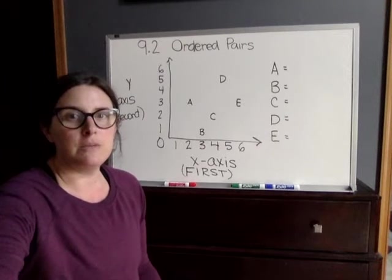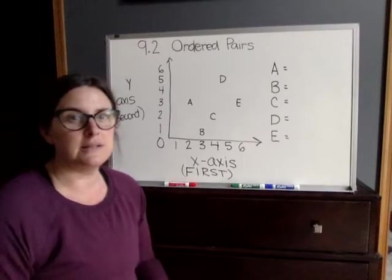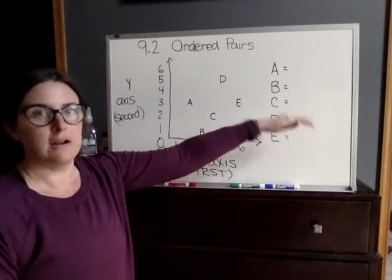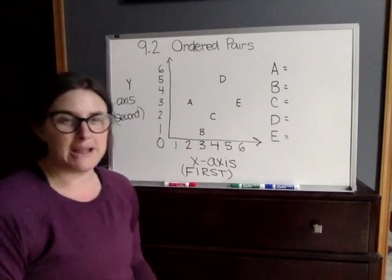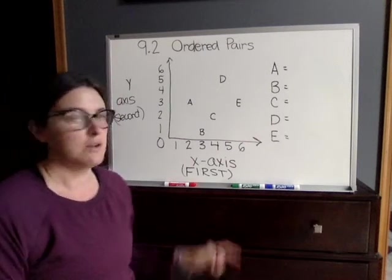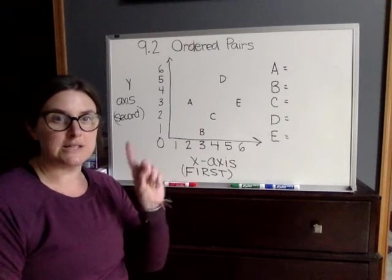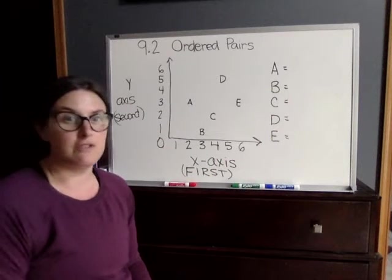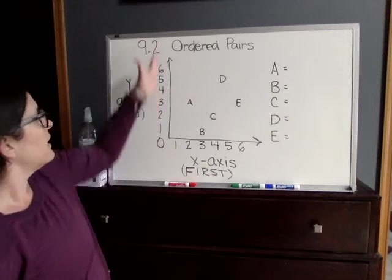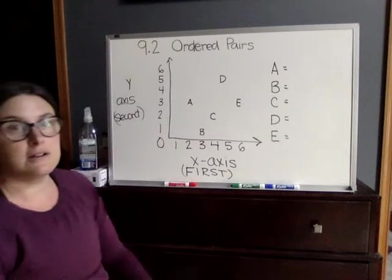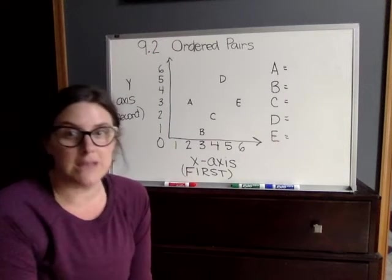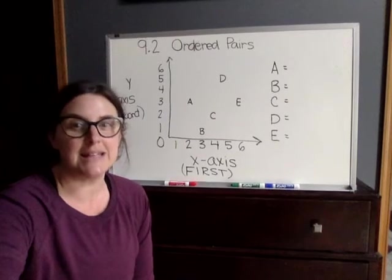So what you will be working on is labeling where your plot points are by giving me your numbers. So your x-axis, which is horizontal across, that's always going to be your first number that you write down. Your vertical line here, the y-axis, is always, always going to be the second number.